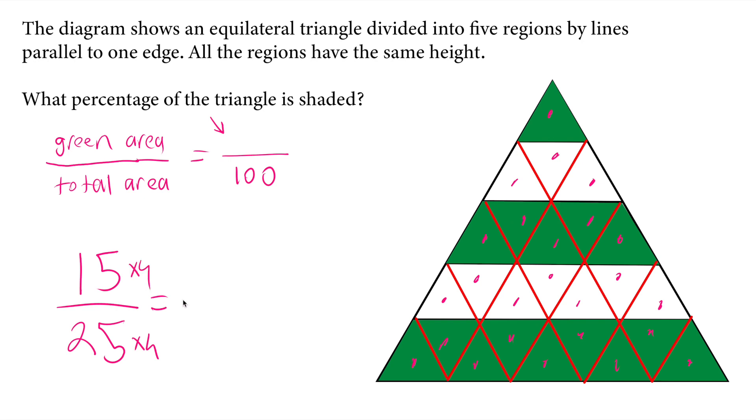So if we compare this to 100, we need to multiply the denominator by 4, so our numerator will be 60 and this is equivalent to 60 percent. So this is our solution. It is 60 out of 100, and 60% of this equilateral triangle is shaded green.